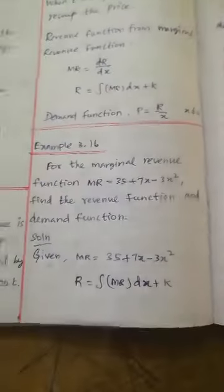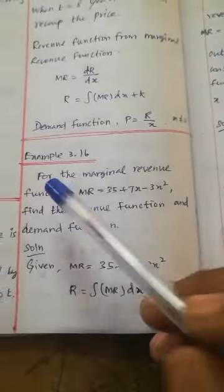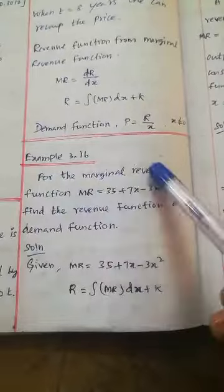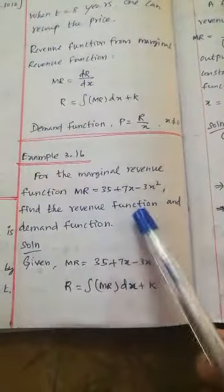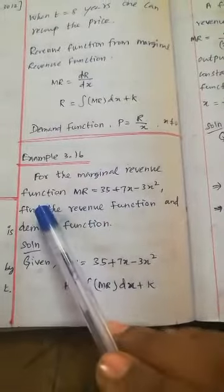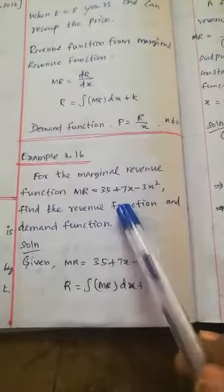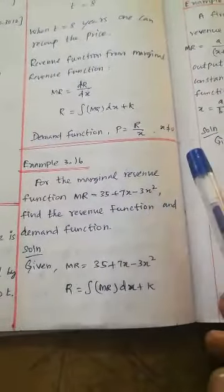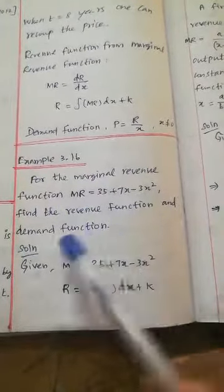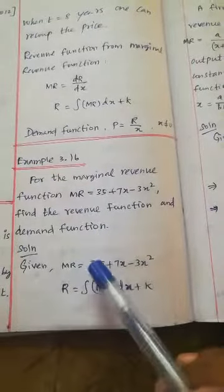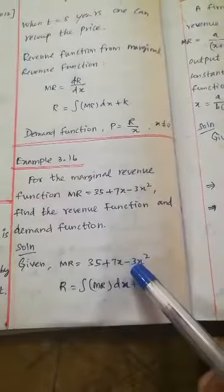Same procedure: first find the marginal revenue function MR, then find the revenue function and demand function. For the marginal revenue function MR = 35 + 7x - 3x².